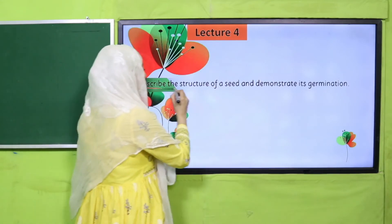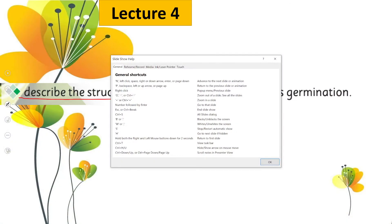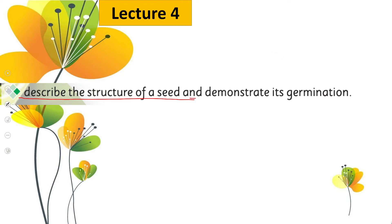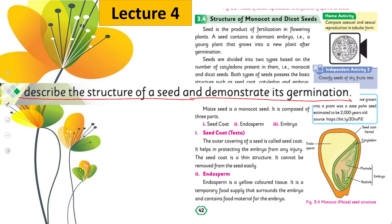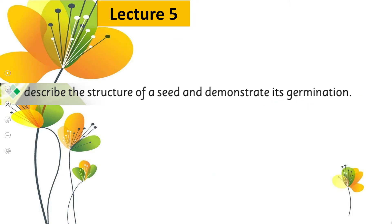In lecture number four, the students will be able to describe the structure of a seed and demonstrate its germination. We will look at the structure of seeds — like monocot or dicot — what happens internally and how it happens. We will dissect it and also see how it germinates. The reading pages are 42 and 43.